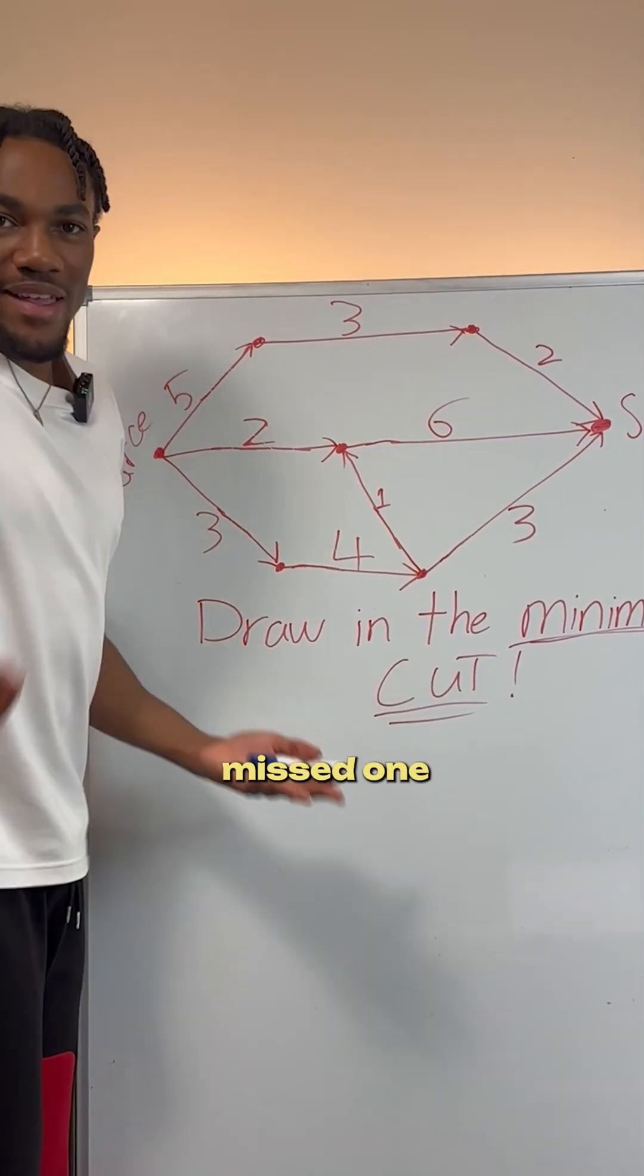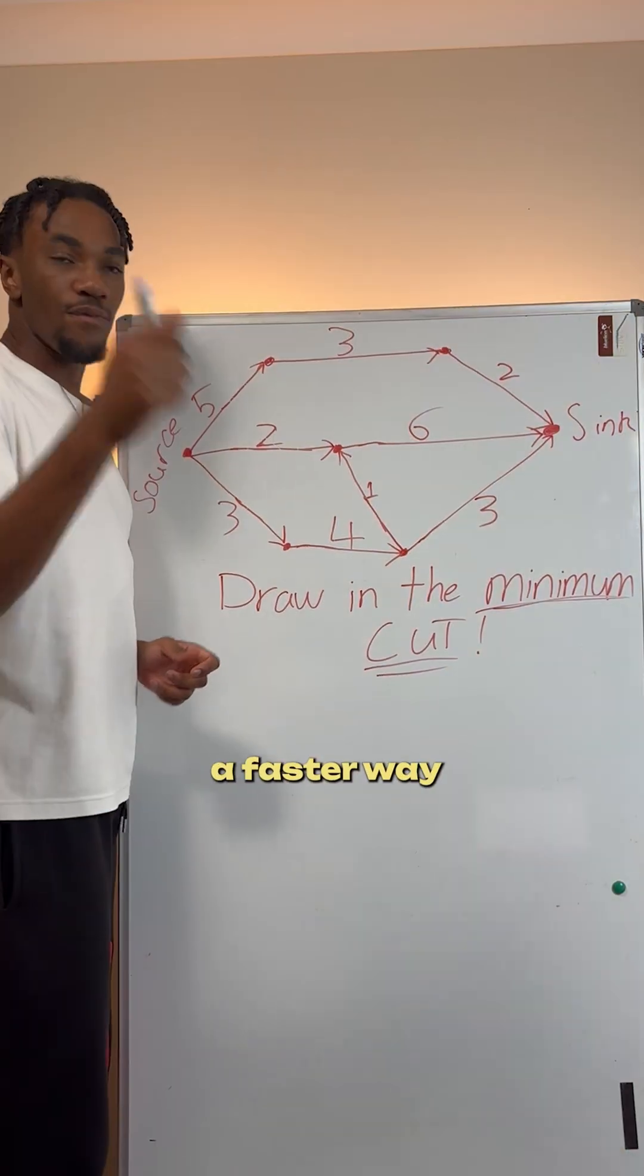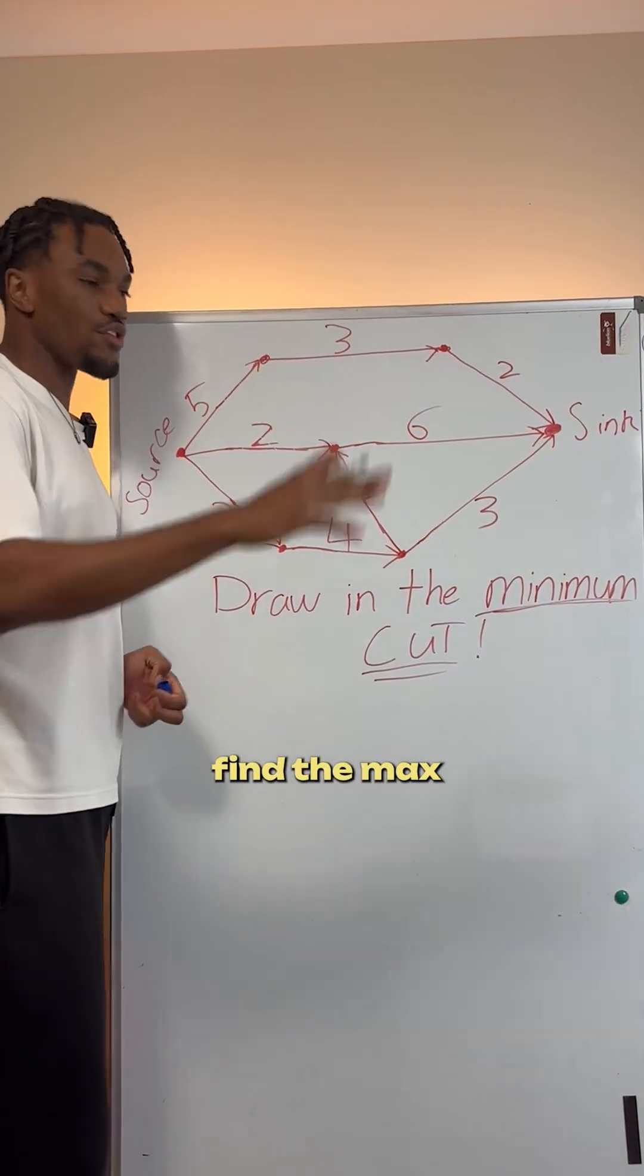And three, what if you miss one and that's the minimum cut? You're just screwed. Here's the fastest way. You first find the max flow.